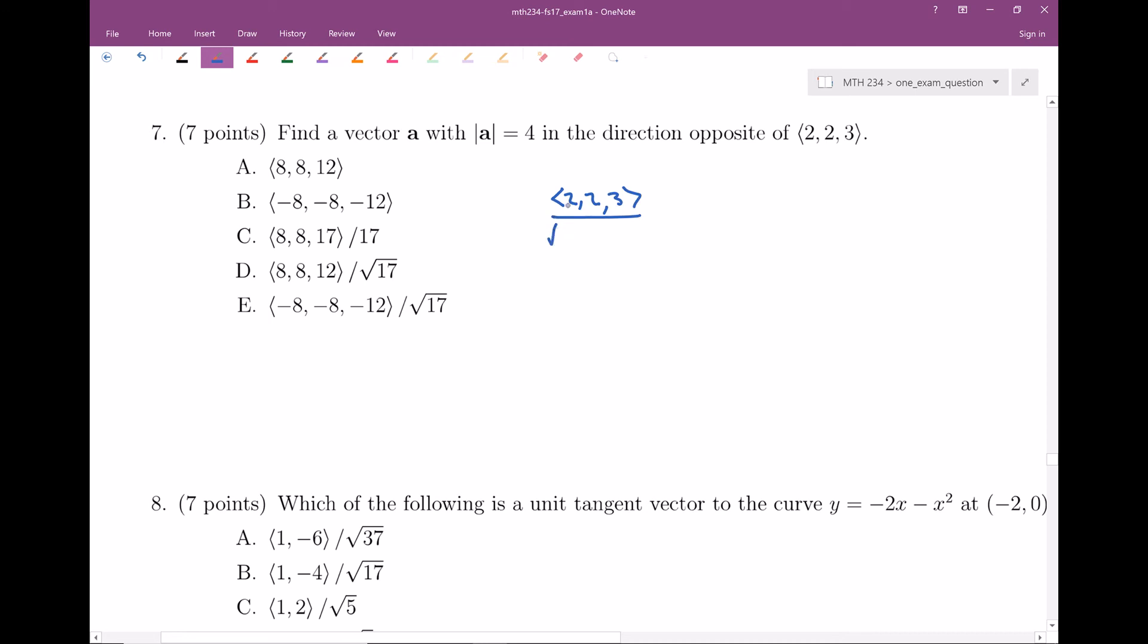So the magnitude of <2, 2, 3>: two squared is 4, plus two squared is 4, plus three squared is 9. So <2, 2, 3> divided by √17.